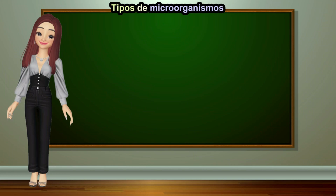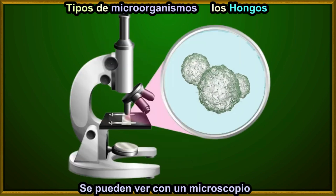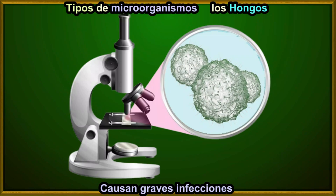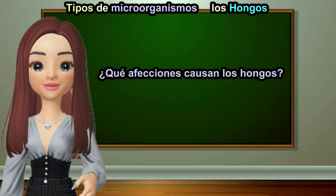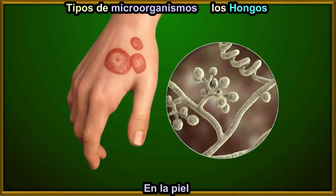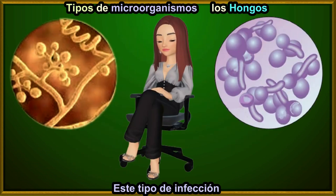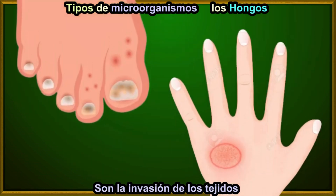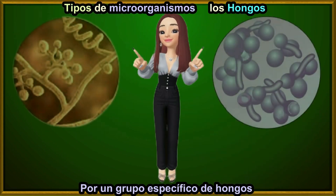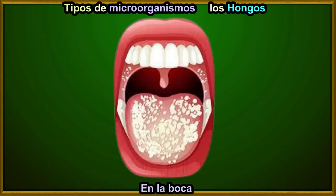Another type of microorganism is fungi. Microscopic fungi are so small that they can only be seen with a microscope, but they always cause many infections. Fungi can cause skin infections like athlete's foot or candidiasis. These are known as fungal infections because they are the invasion of tissues by one or more species of fungi. Fungi typically appear in moist areas of our body, such as between the toes or in the mouth.